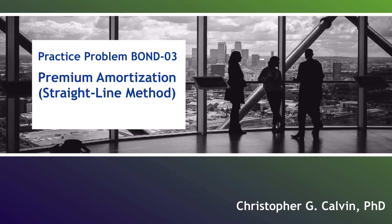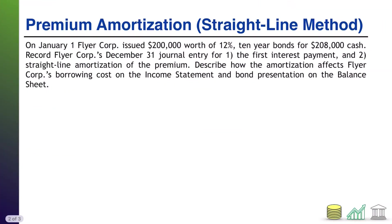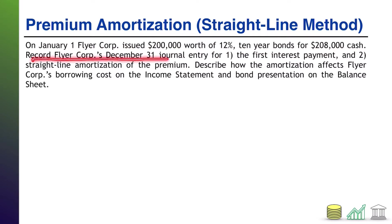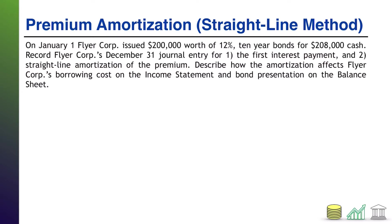Hi everyone. Welcome to Practice Problem Bond 03. This one is going to test your knowledge of straight line amortization, specifically of a bond premium. On January 1st, FlyerCore issued $200,000 worth of 12% 10-year bonds for $208,000 cash. Record FlyerCore's December 31 journal entry for the first interest payment and straight line amortization of the premium.